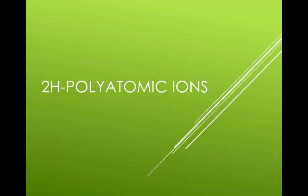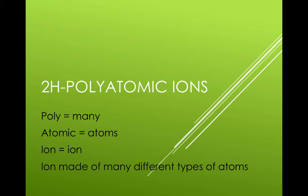Lesson 2-H, polyatomic ions. Poly means many. Atomic refers to atoms. Ions are atoms that are charged due to a difference in protons and electrons. So polyatomic ions are ions composed of more than one atom.